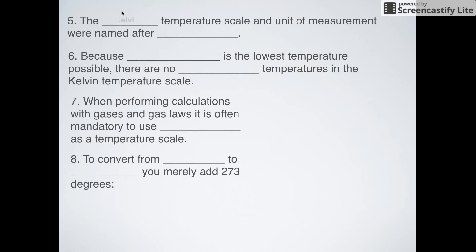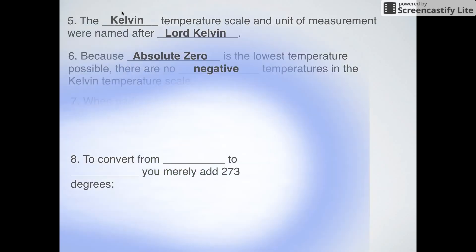So what else do we need to know? The Kelvin temperature scale and the unit itself, Kelvin, was named after Lord Kelvin. Absolute Zero is set on the Kelvin scale as the lowest temperature that is humanly possible. What that means is that there are no negative temperatures on the Kelvin temperature scale.